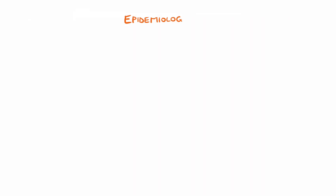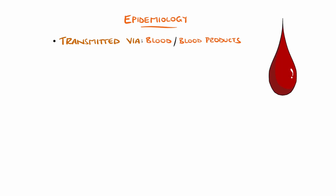HIV can be transmitted through blood or blood products, fluids containing blood, sexual fluids, or breast milk, with most adults being infected by sexual exposure or through injection drug use.